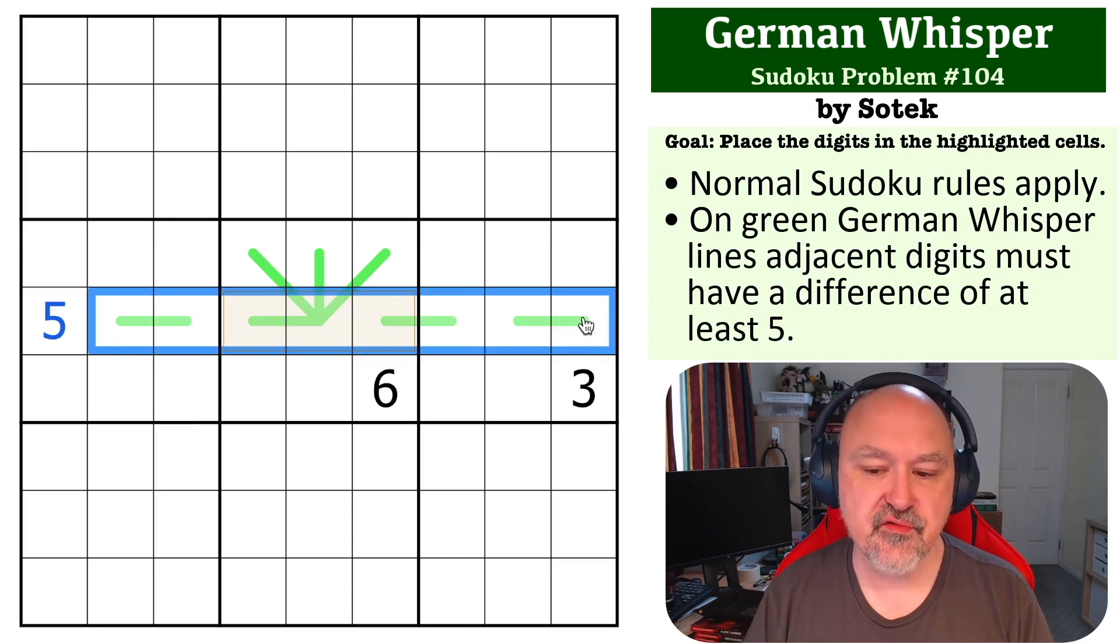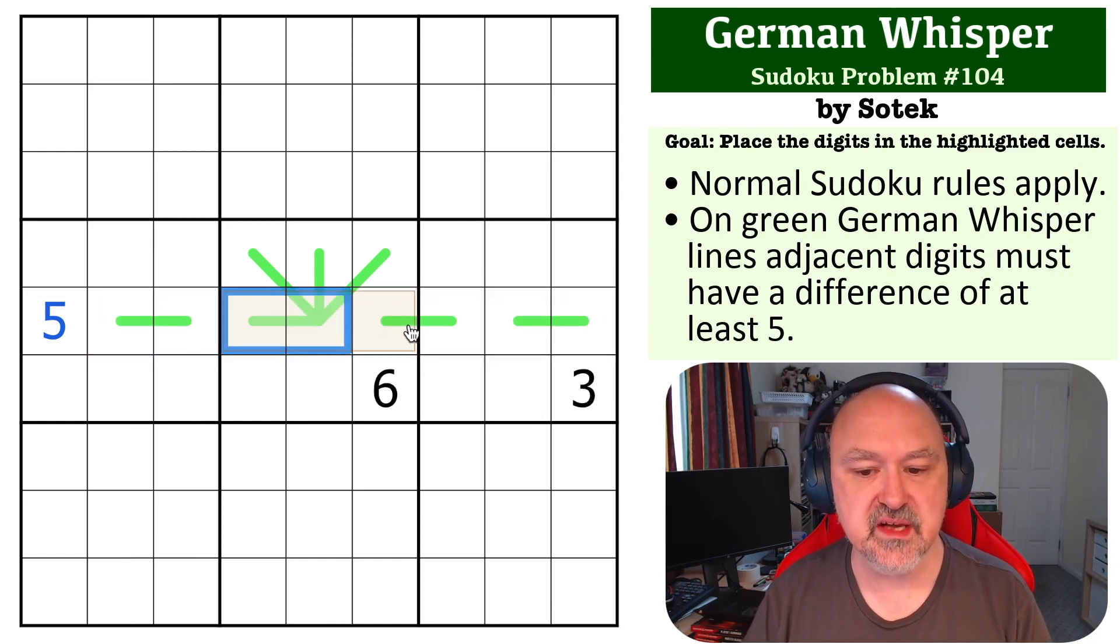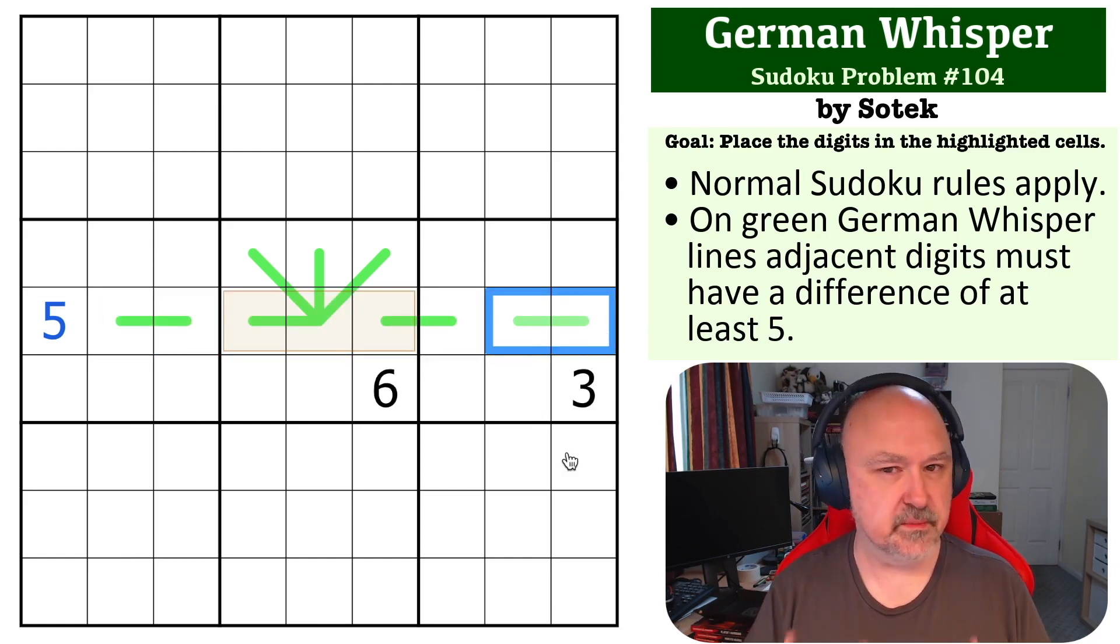Now there is a trick in row five that is very important to understand because these are two cell long German whisper lines. And I'm going to go into the concept of this. May not be a hundred percent required to solve this, but I do want to go into this trick because I think it's very important.